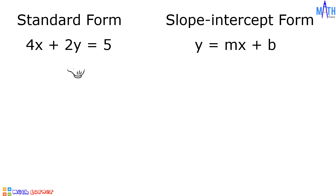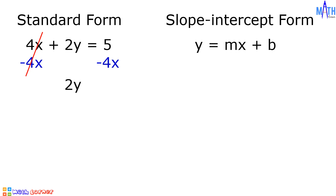We need to isolate Y, and to do that, we need to add negative 4x to both sides of the equation. On the left side, 4x plus negative 4x is equal to 0, and 0 plus 2y is equal to 2y. On the right side, we have negative 4x plus 5.